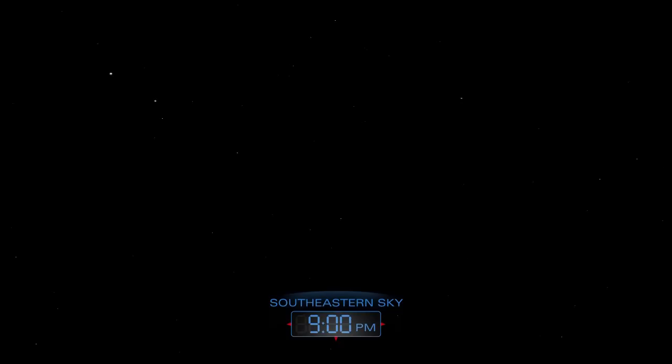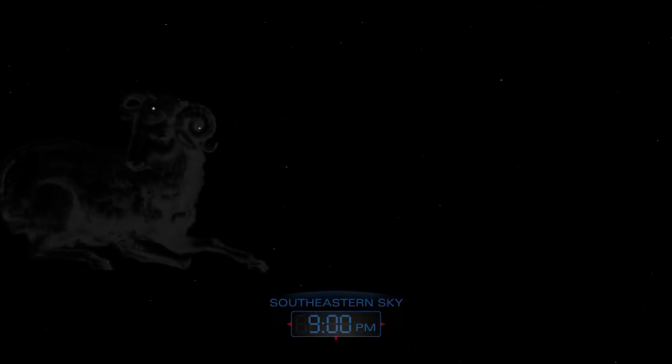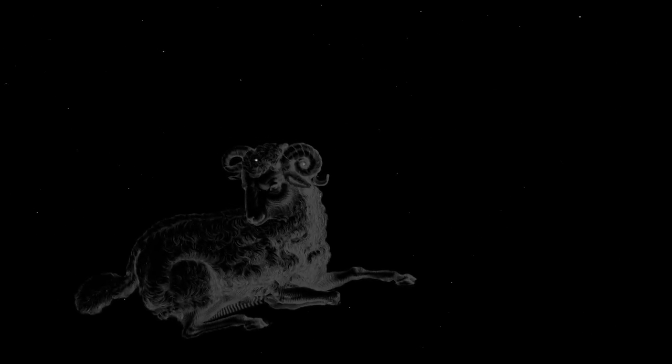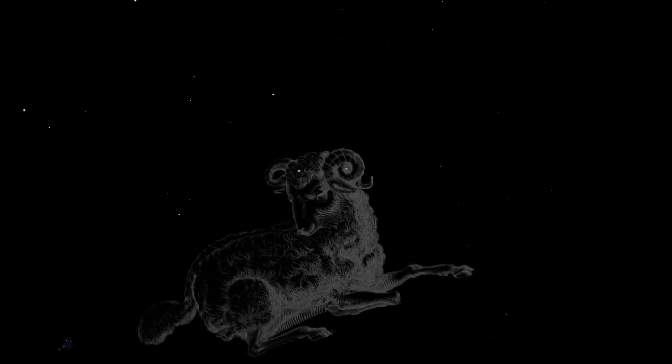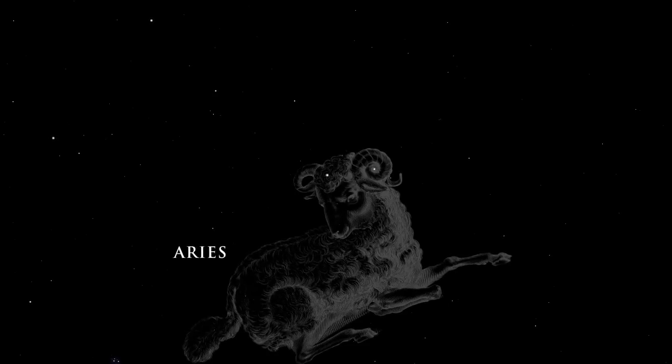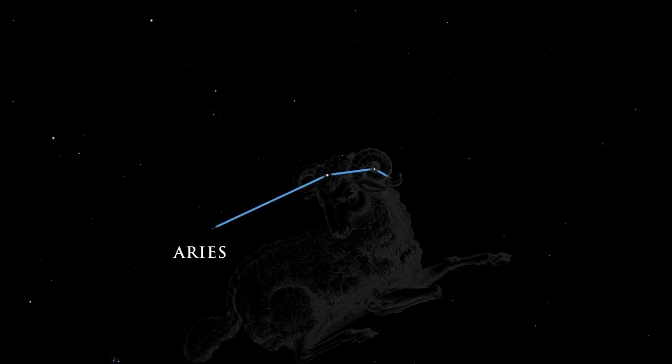Just to the east of Pisces lies Ares, the golden ram of the Greek gods. It is a dim constellation.